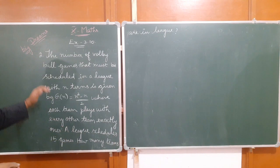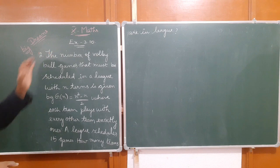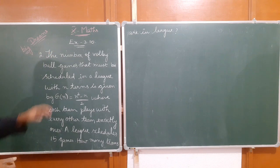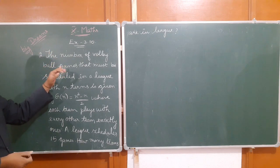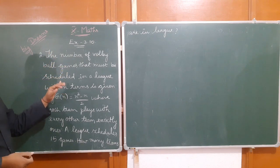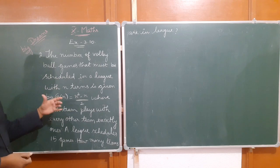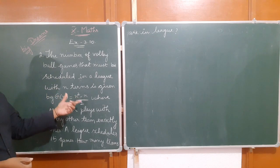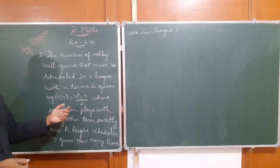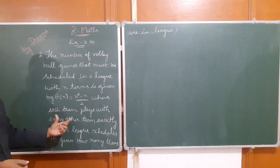Next, we are going to see the second problem, exercise 3.10. The number of volleyball games that must be scheduled in a league with n teams is given by g(n) = (n² - n) / 2, where each team plays with every other team exactly once.